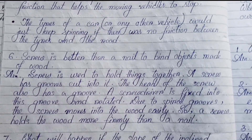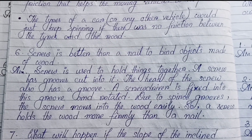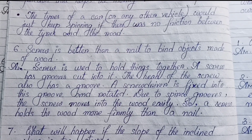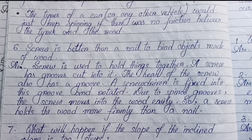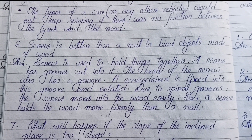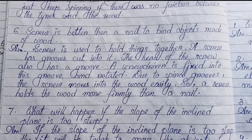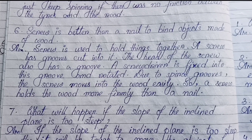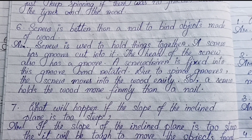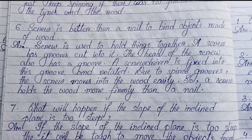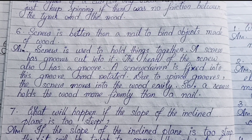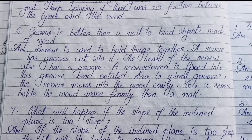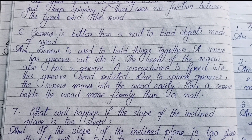Number six: A screw is better than a nail to bind objects made of wood. A screw is used to hold things together. A screw has grooves cut into it, and the head of the screw also has a groove. The screwdriver is fixed into this groove and rotated. Due to the spiral grooves, the screw moves into the wood easily, so a screw holds the wood more firmly than a nail.